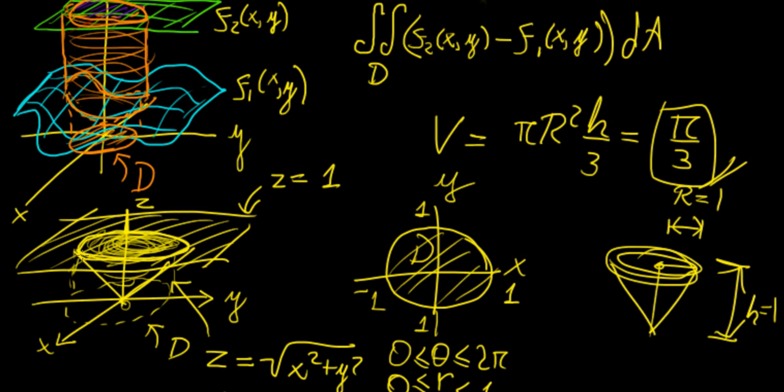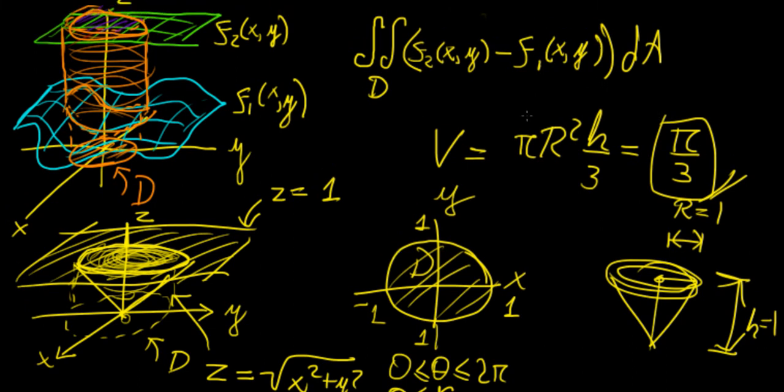You might wonder why we want to find the volume if we already have a formula. Well, you can actually derive this formula if you exchange those limits by generic limits, like some constant r and h. But more importantly, you can find the volume between any two surfaces just by setting up the integral using this particular form.